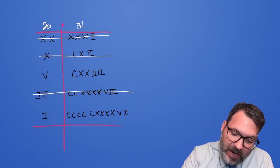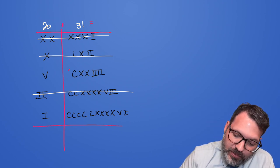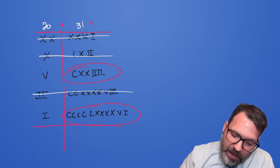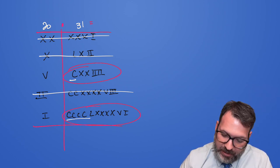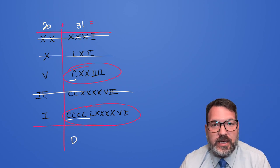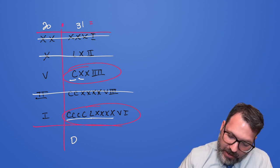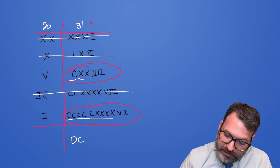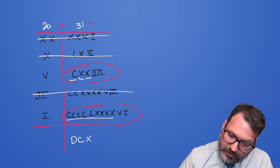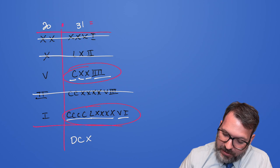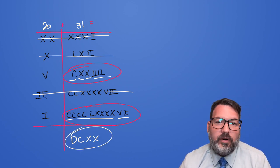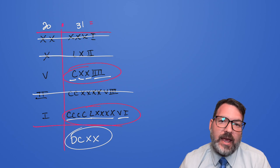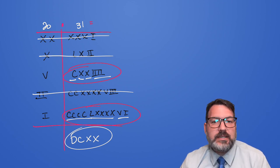The product, 20 times 31, is going to be the same thing as the sum of whatever symbols remain. One, two, three, four, five C's is 500, that's a D. And L and five of the X's make another 100, that's a C. And then we have this X for another 10, and then VI and four I's makes yet another 10. And so there it is. The product of XX and XXXI is DCXX.